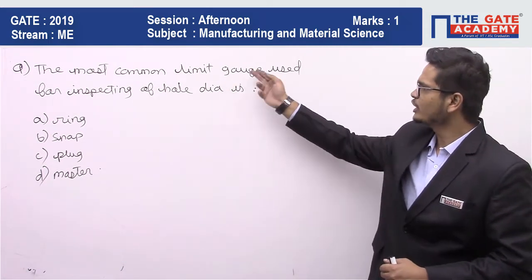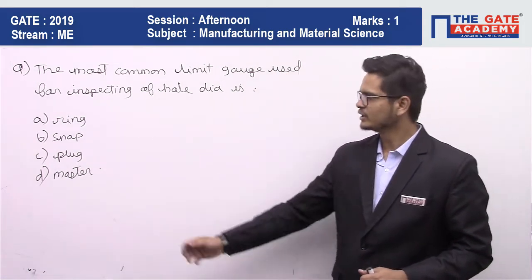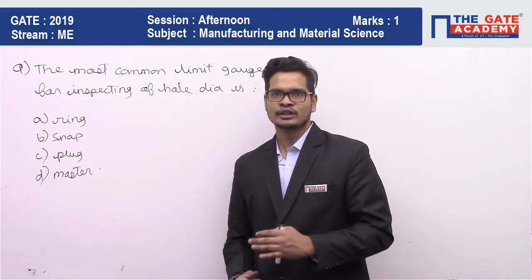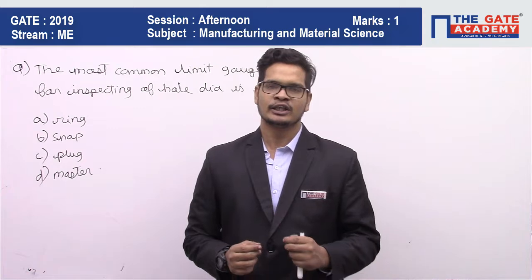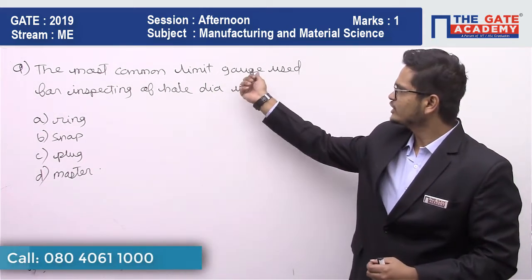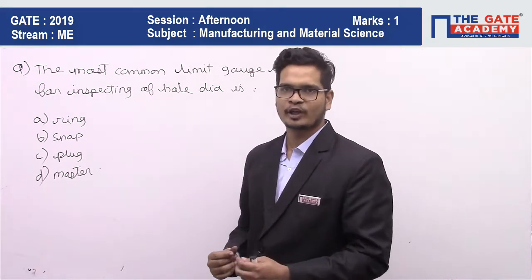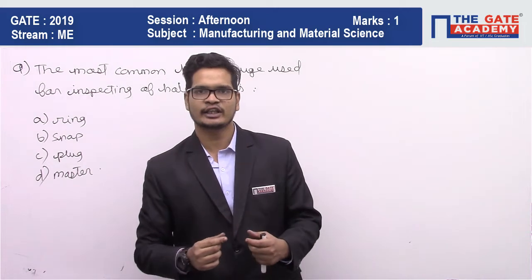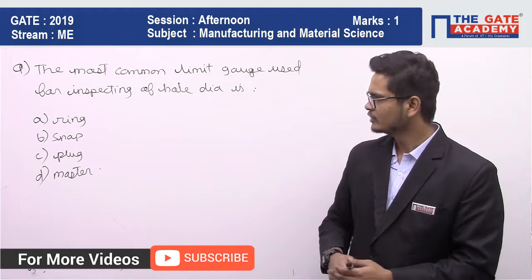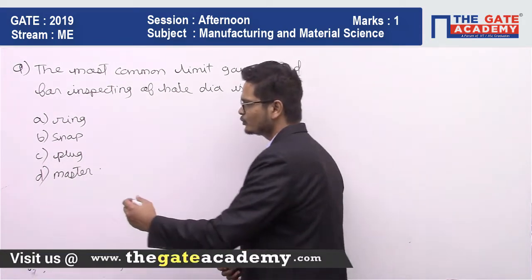The question is: the most common limit gauge used for inspecting hole diameter. The four options are ring gauge, snap gauge, plug gauge, and master gauge. Whatever we are inspecting, we always take the gauge of opposite shape. In this question they are asking us to inspect a hole, so we need a gauge of opposite shape — meaning the shape of a shaft. The plug gauge has the shape of a shaft.